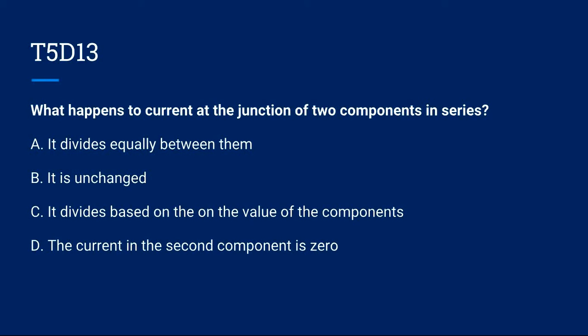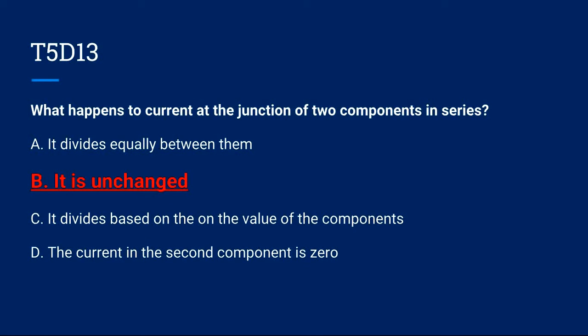T5D13: What happens to current at the junction of two components in series? A. It divides equally between them, B. It is unchanged, C. It divides based on the value of the components, or D. The current in the second component is 0. Correct answer is B. It is unchanged.